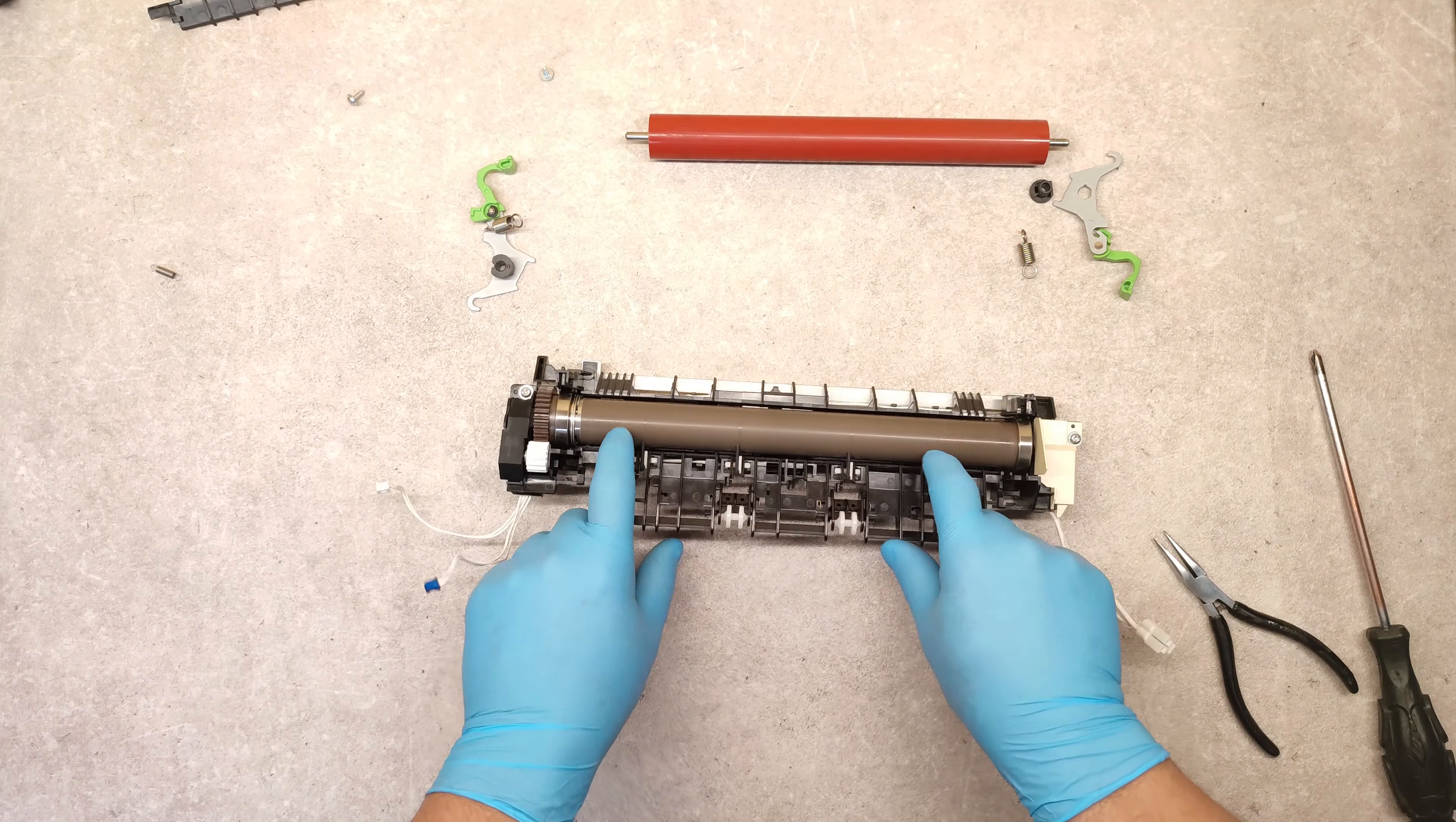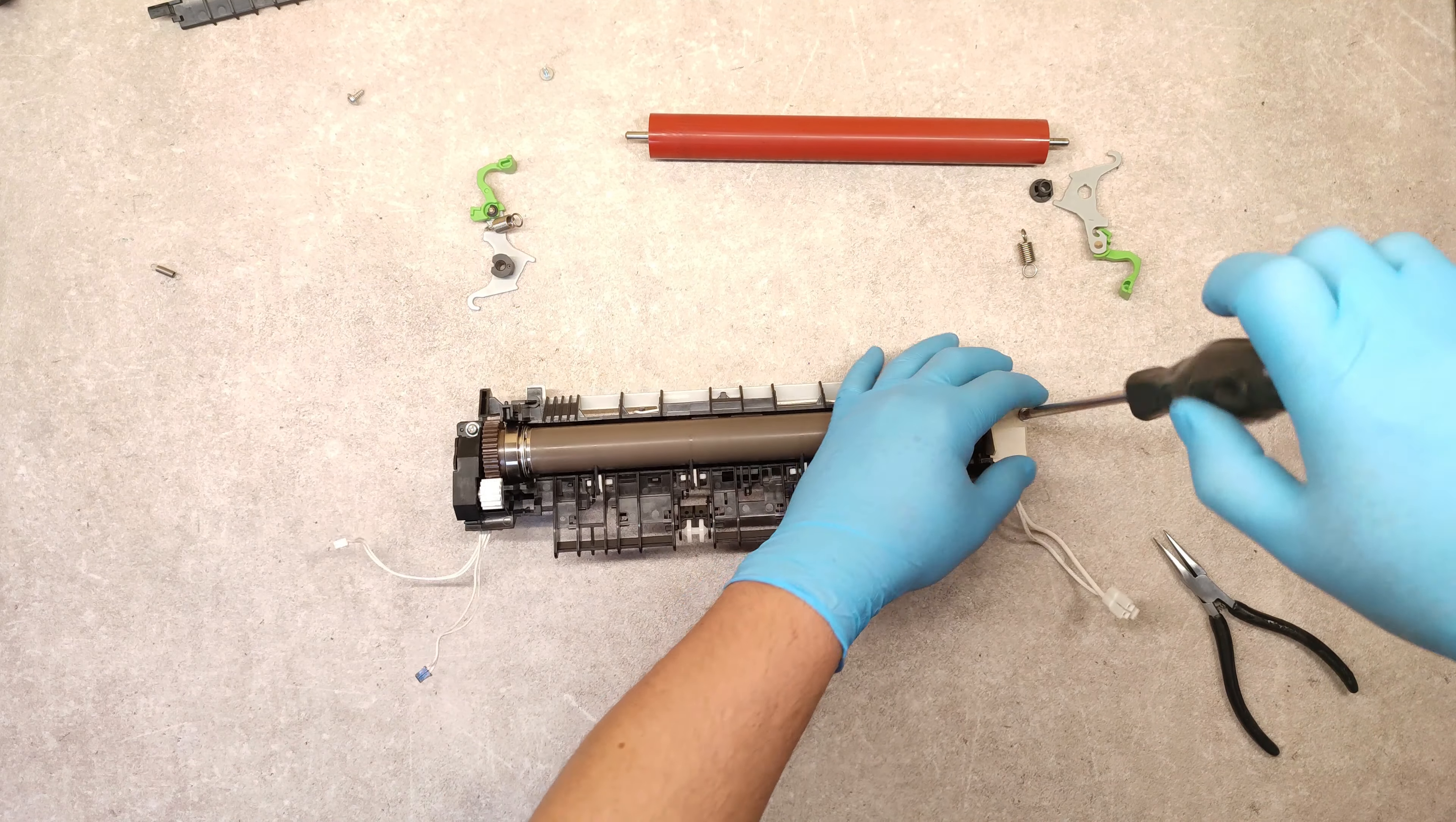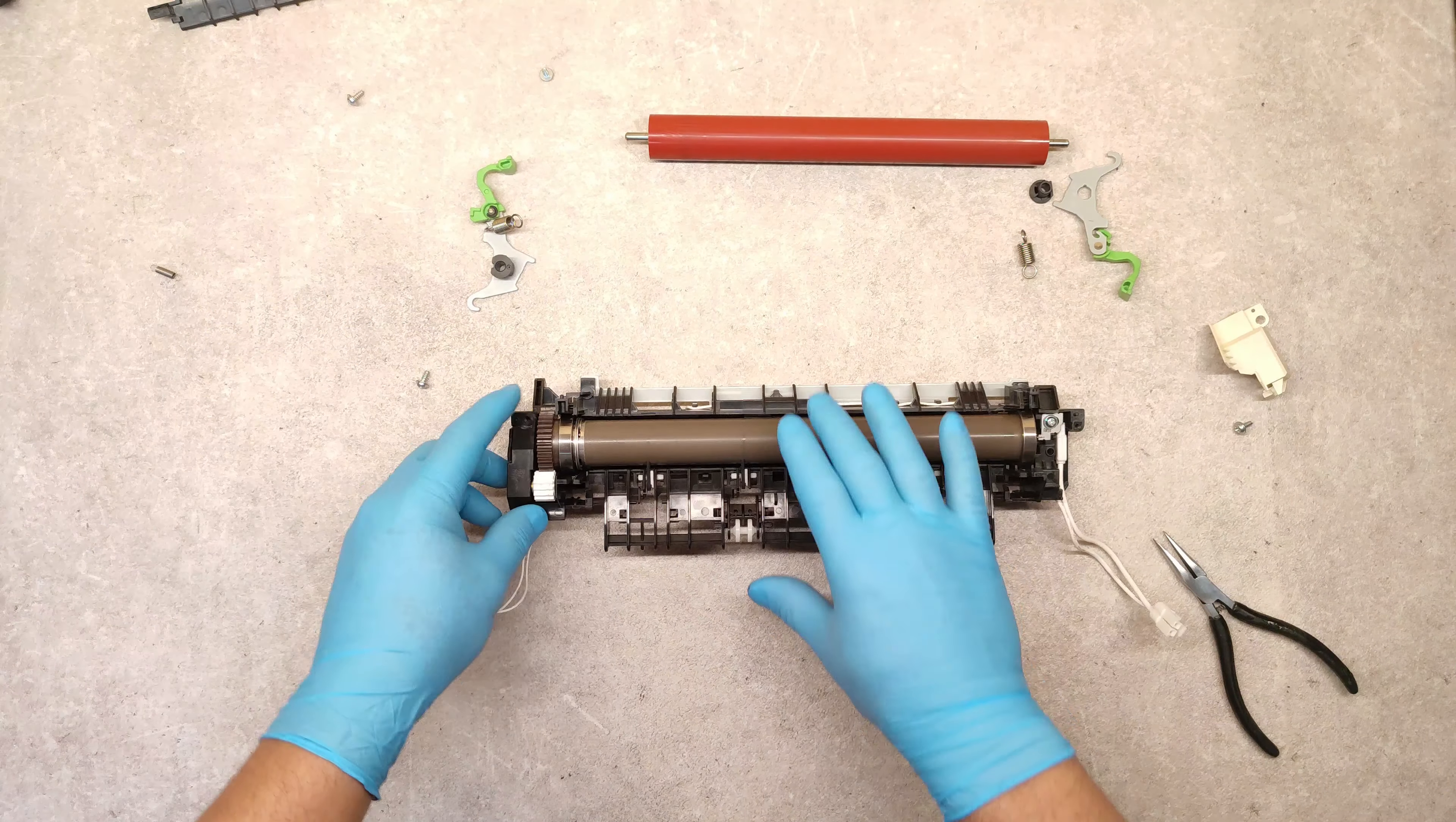Now we are starting with disassembly of this fuser unit to reach this fusing module. First we need to remove these side covers. This white cover first, and on the other side, this black cover.